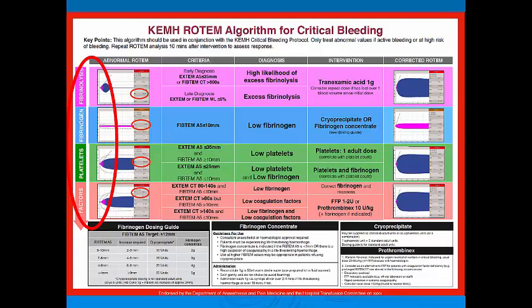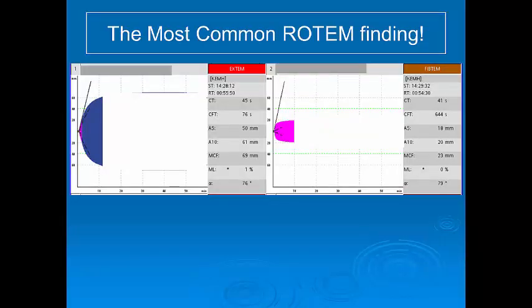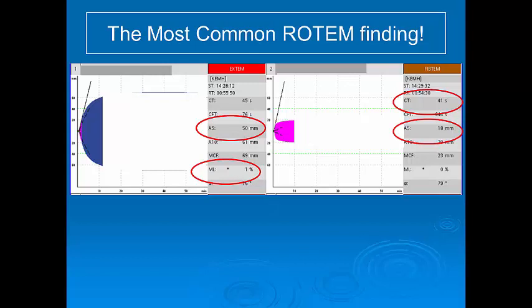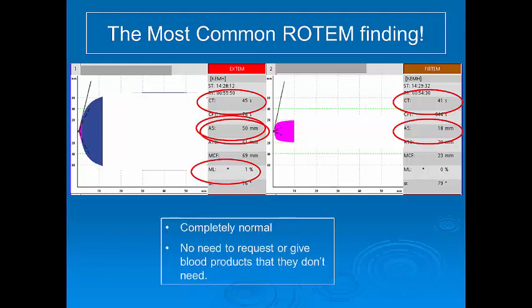Here is a brief case to demonstrate the overall process. This is a standard ROTEM — an EXTEM and a FibTEM — from an obstetric patient who has bled about 2 litres, shown after running for about 10 minutes. A normal EXTEM A5, FibTEM clotting time, and ML indicate that fibrinolysis is unlikely. There is no need for fibrinogen as the FibTEM A5 is greater than 10mm, no need for platelets as the EXTEM A5 is greater than 35mm, and no need for clotting factors as the EXTEM clotting time is less than 80 seconds. This shows normal haemostasis — a normal ROTEM is actually the most common finding in many bleeding patients.